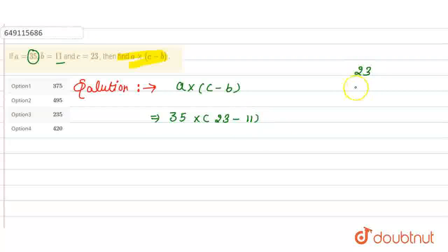So here we will subtract 23. If I subtract 23, then 3 minus 1, that is 2. And here I have 2 minus 1, that is 1. So clearly, I have 35, and this will multiply in 12.